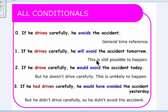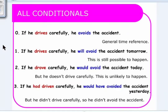The second conditional: 'If he drove carefully, he would avoid the accident today.' But he doesn't drive carefully — this is unlikely to happen. So what is the difference between the first and second? Both are in the present or future time, but the first is likely to happen and the second is unlikely to happen.